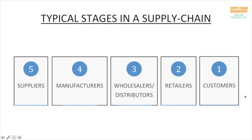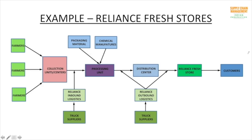The first stage is the customer. A customer goes to a retailer to purchase a product, and the retailer provides the product to the customer. Whenever the retailer is in short supply of a particular product, the retailer goes to a wholesaler or distributor. Wholesalers or distributors get their products from manufacturers, and manufacturers produce products from raw materials supplied by suppliers.